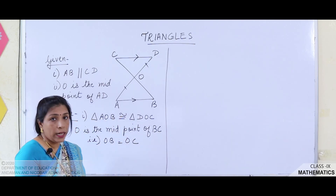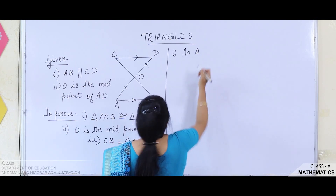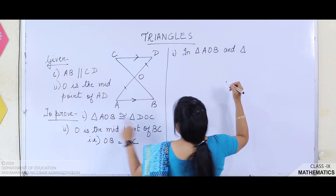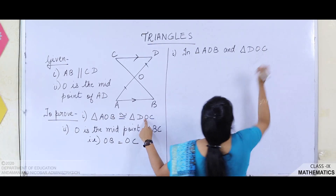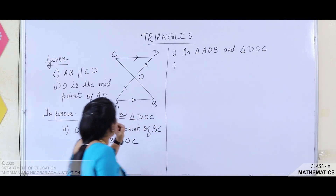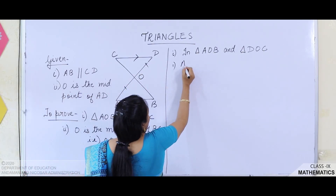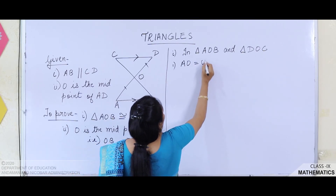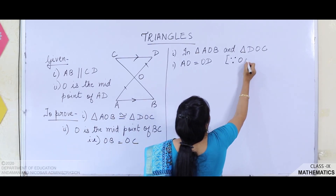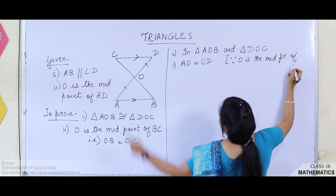Let's begin. In triangle AOB and triangle DOC, we need to find three equal parts. The first one: since O is the midpoint of AD, we get AO is equal to OD. The reason is that O is the midpoint of AD.